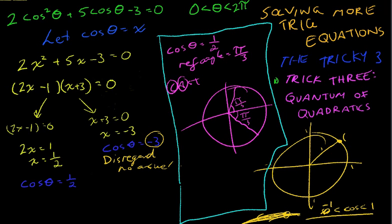Now our domain's only between 0 and 2 pi, so there's going to be two answers. Theta is equal to this angle, pi on 3, or this angle, 5 pi on 3.